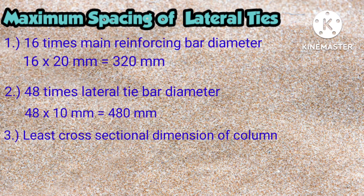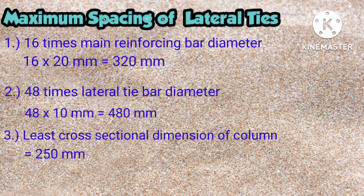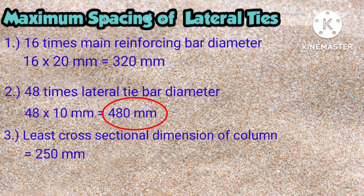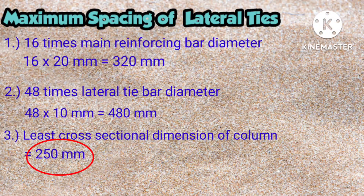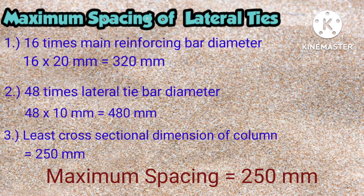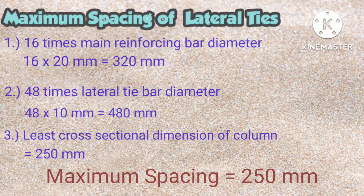Third, we will identify the value of the least cross-sectional dimension of the column. Based on the figure, 25cm or 250mm is the least dimension of the column. Looking back at the results, we have 320mm, 480mm, and 250mm. The least of these results is 250mm, so therefore we are going to use a maximum spacing of 250mm for the lateral ties.